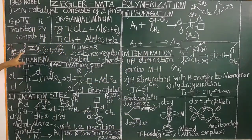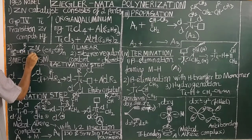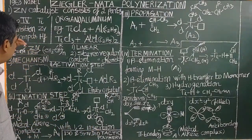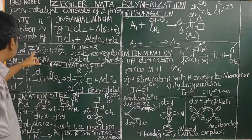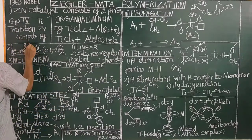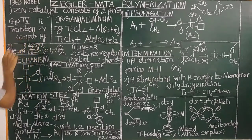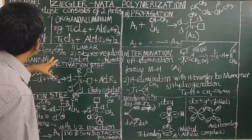Let us see an example. Take propene. In the presence of Ziegler-Natta catalyst, polymerization occurs at one atmospheric pressure. Unlike free radical polymerization, which requires high pressure and high temperature, this reaction occurs at normal temperature — around 20 to 70 degrees Celsius and one atmospheric pressure. This is the advantage of this polymerization reaction.